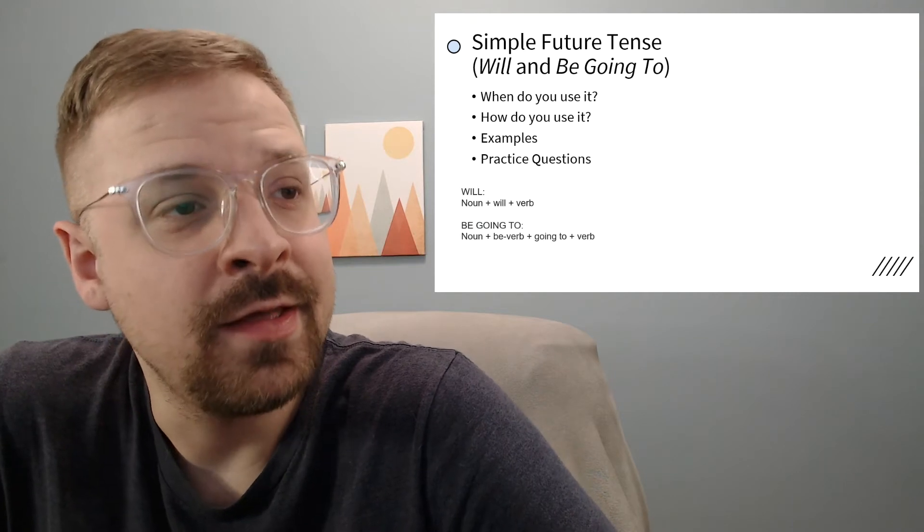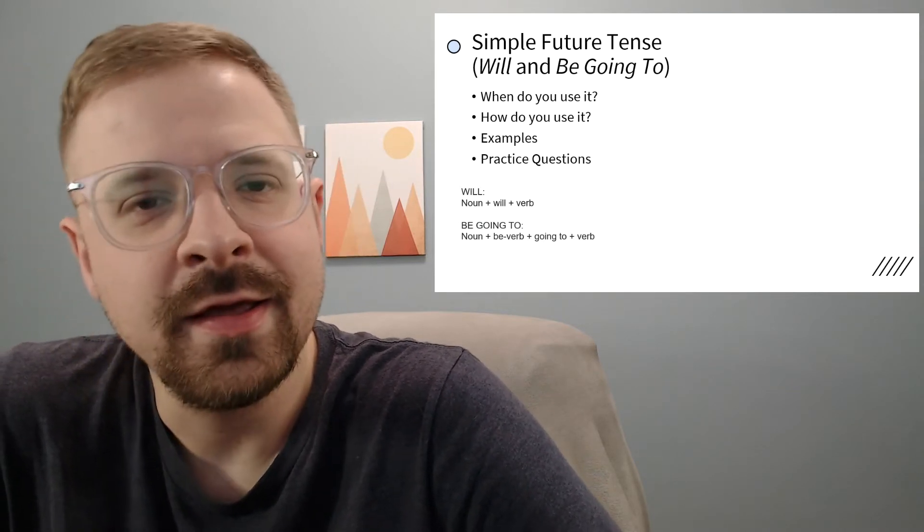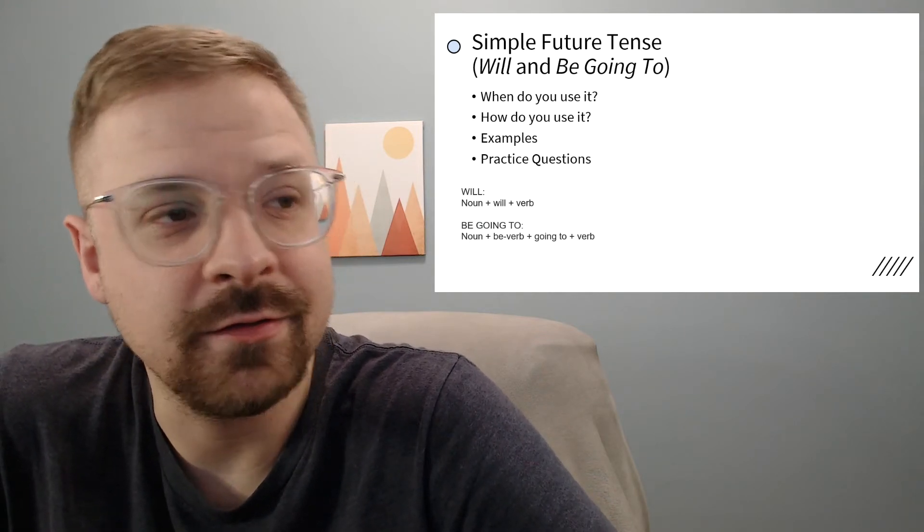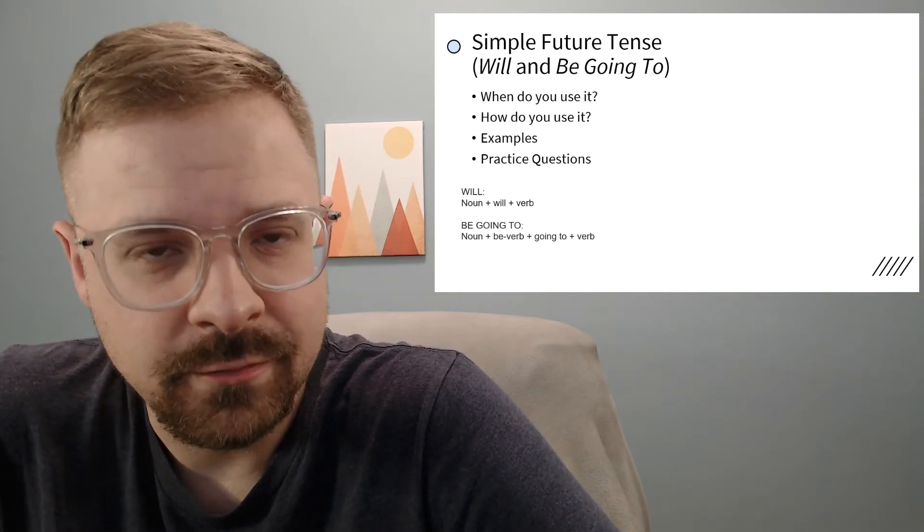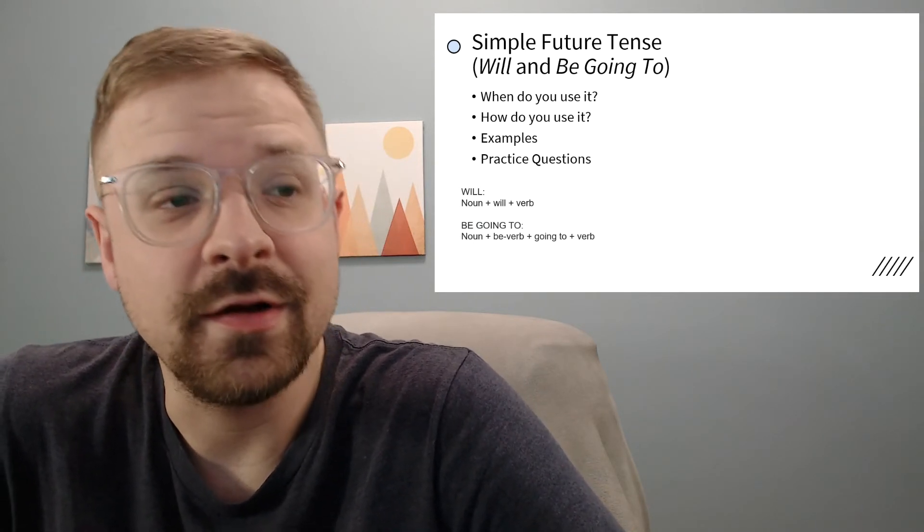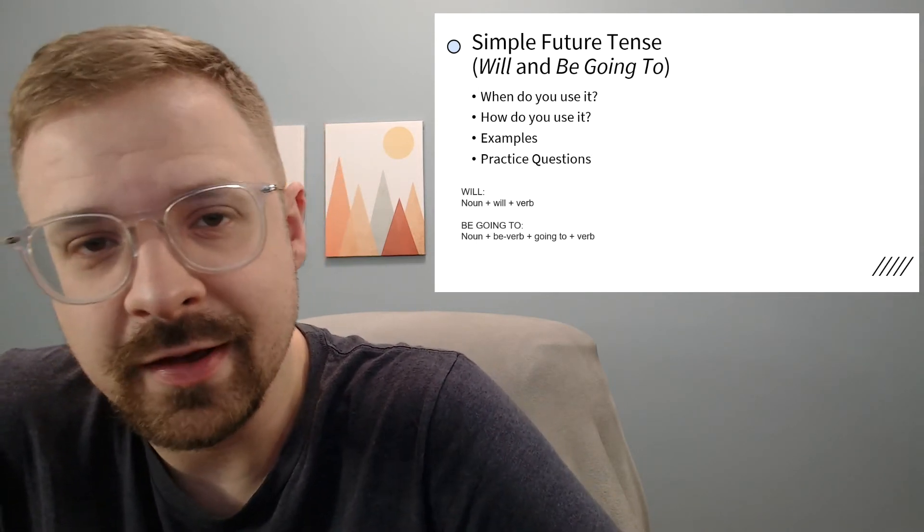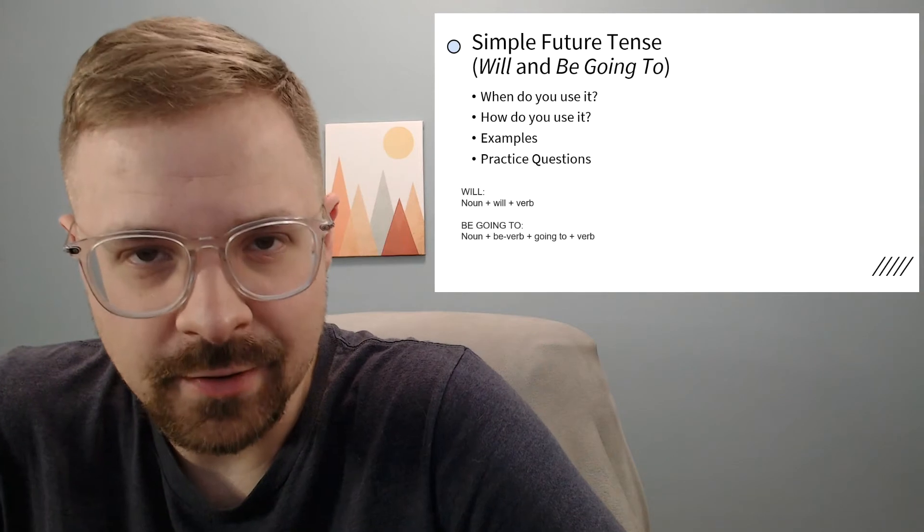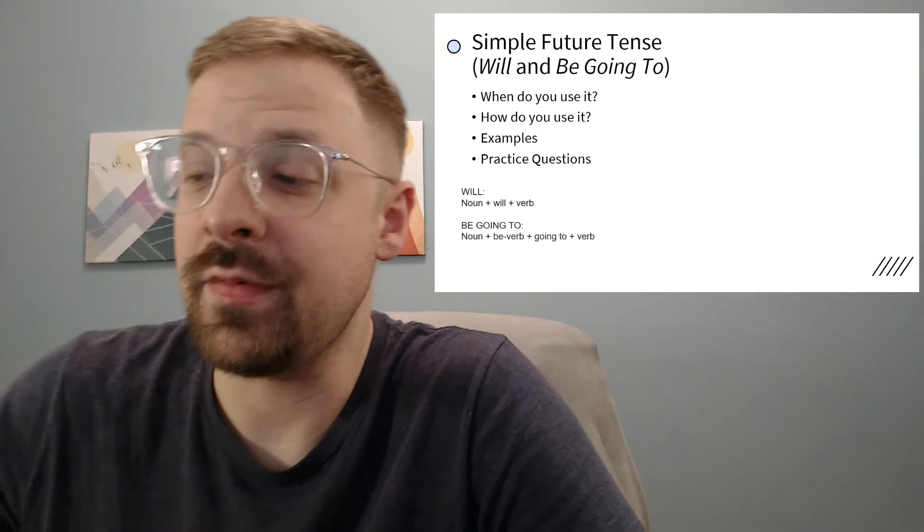Next we have the 'be going to' form. This one's a little bit trickier - you have a few more things to manage, but it's pretty easy once you practice. We have the subject noun, Teacher Peter for example, and then we add the appropriate 'be' verb. So for Teacher Peter it would be 'is' - Teacher Peter is - and then I add 'going to' before my verb. Teacher Peter is going to see the movie this weekend. You are going to watch TV tonight. You are going to feel tired later. You are going to read a book after you eat. All of those are examples of the 'be going to' form.